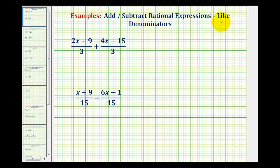To add or subtract rational expressions, we have to have like denominators, which means to add fractions, the denominators must be the same. Notice in both of these examples, we do have like denominators.